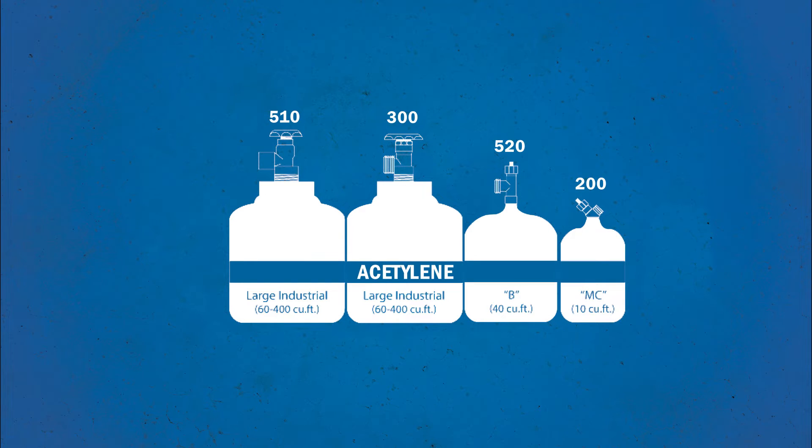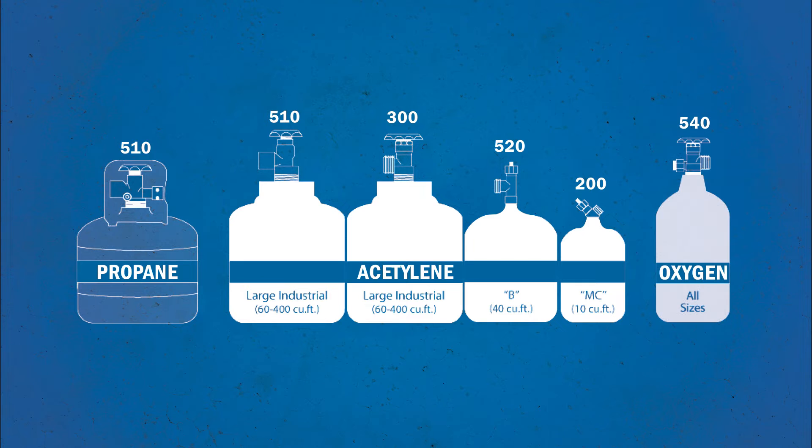LP gases, such as propane or propylene, are available with a CGA 510 inlet connection, and all oxygen cylinder sizes used for oxyfuel cutting, heating, and welding applications use a CGA 540 connection, as shown.